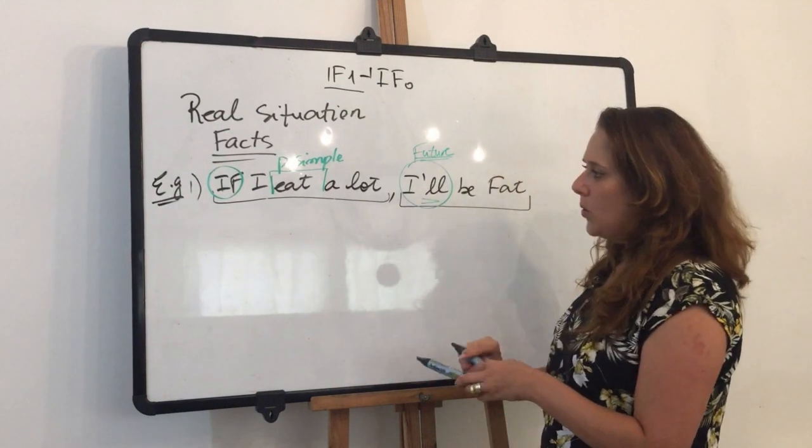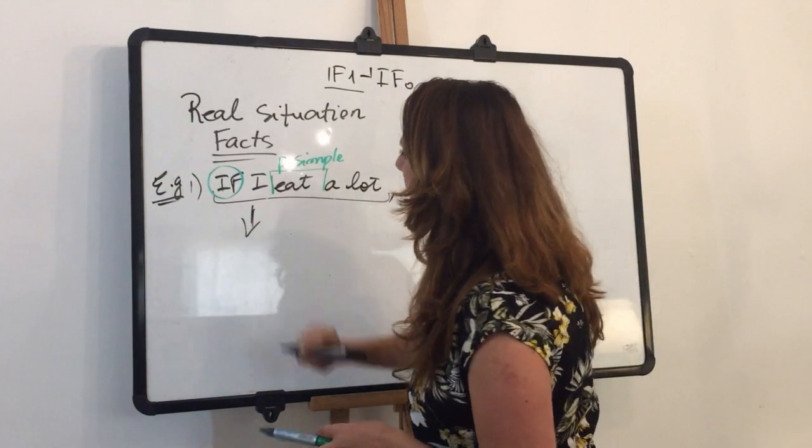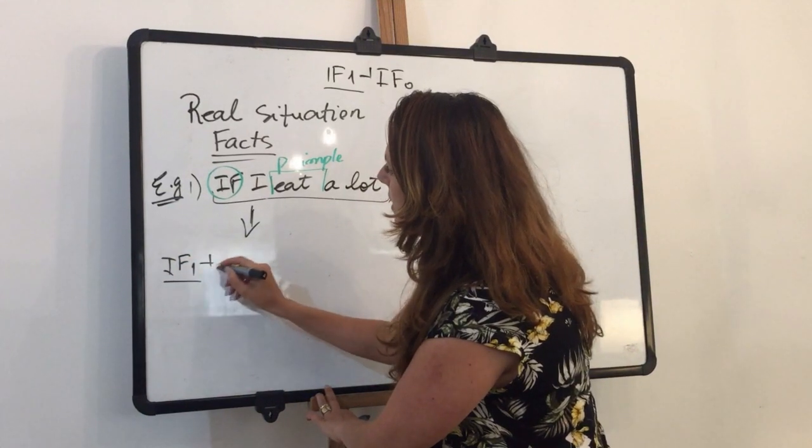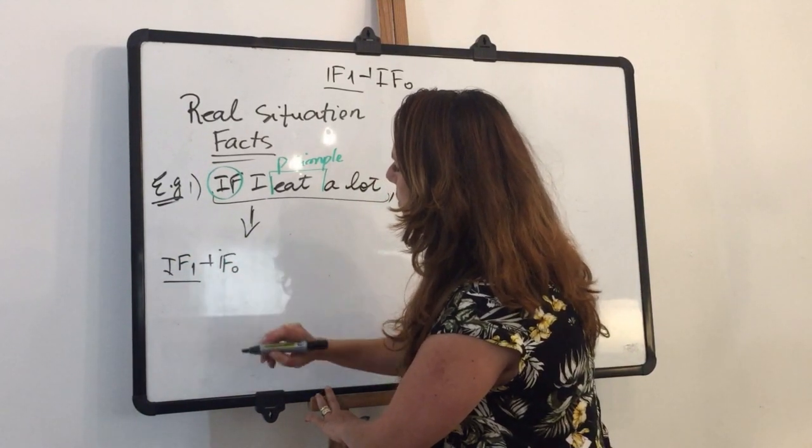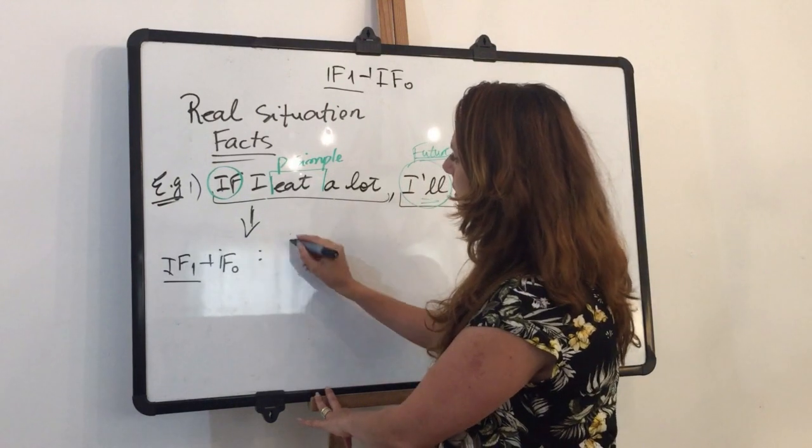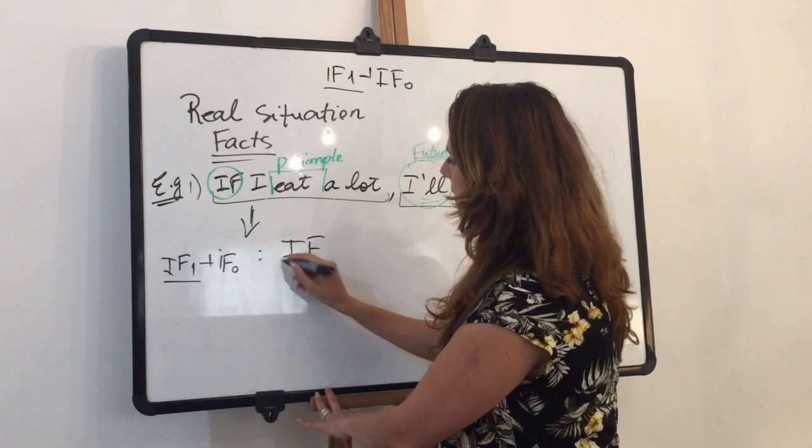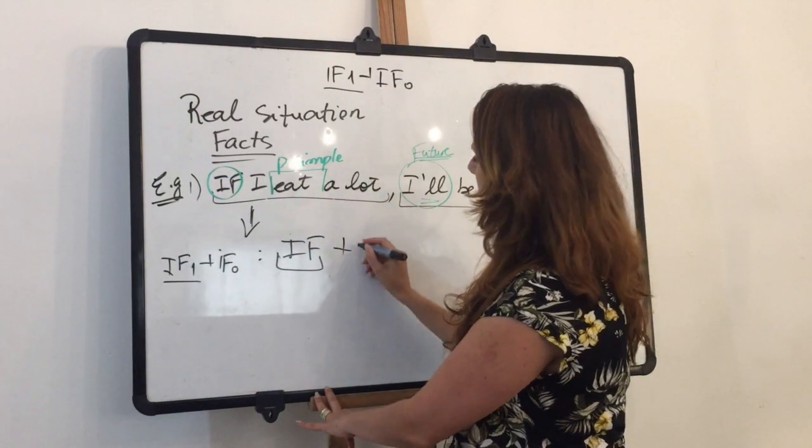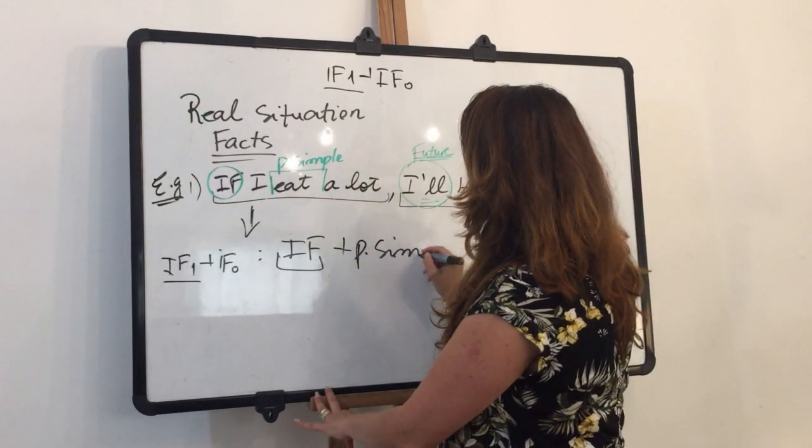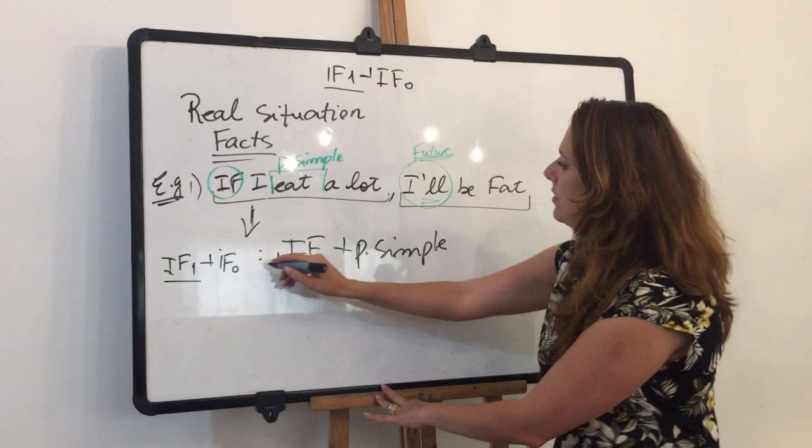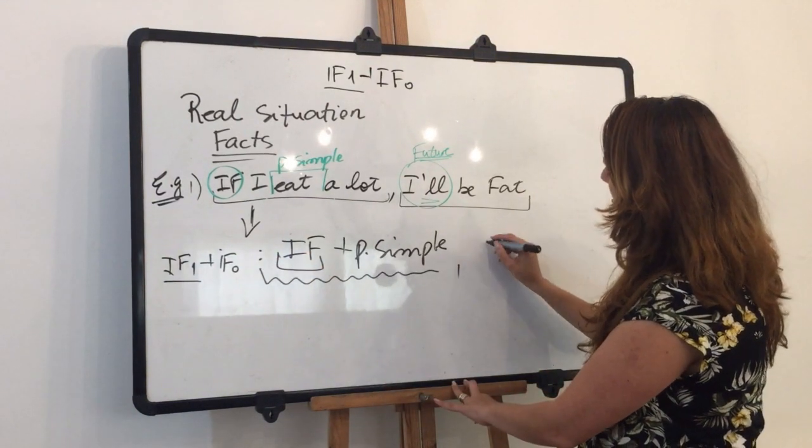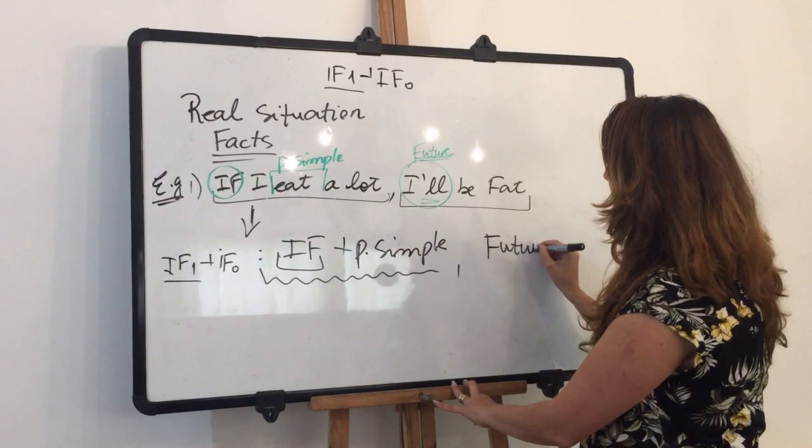So I can say that if one would be: if (conditional word) plus present simple, and the result clause with will plus base verb. If zero would be: if (conditional word) plus present simple, plus present simple.